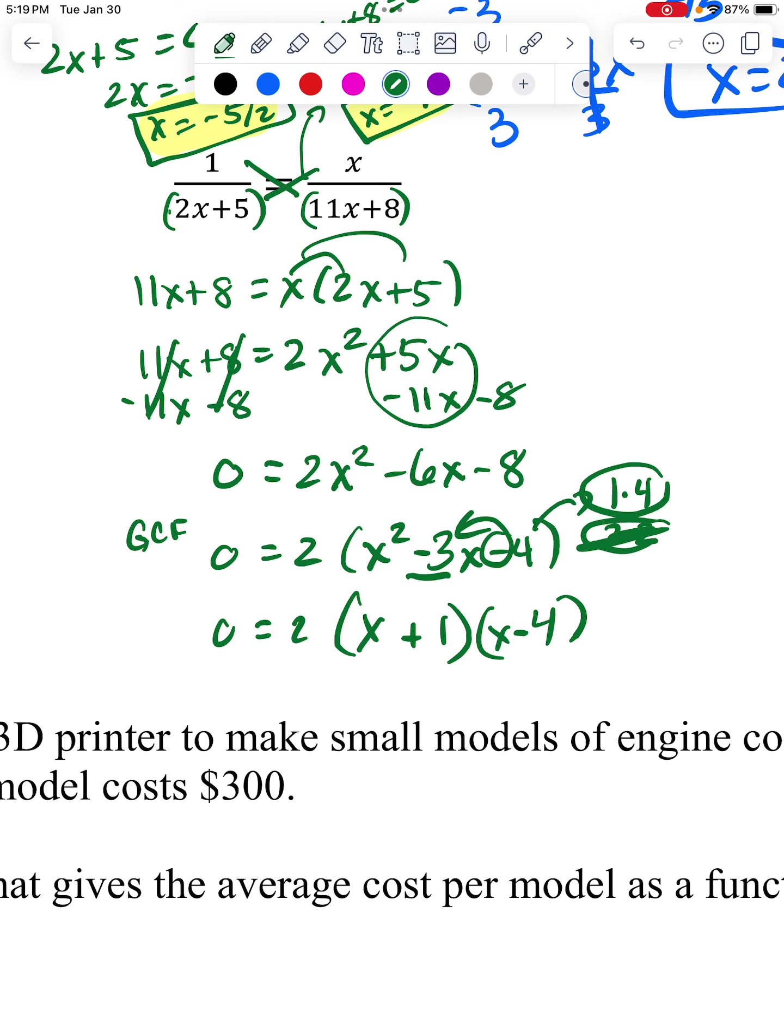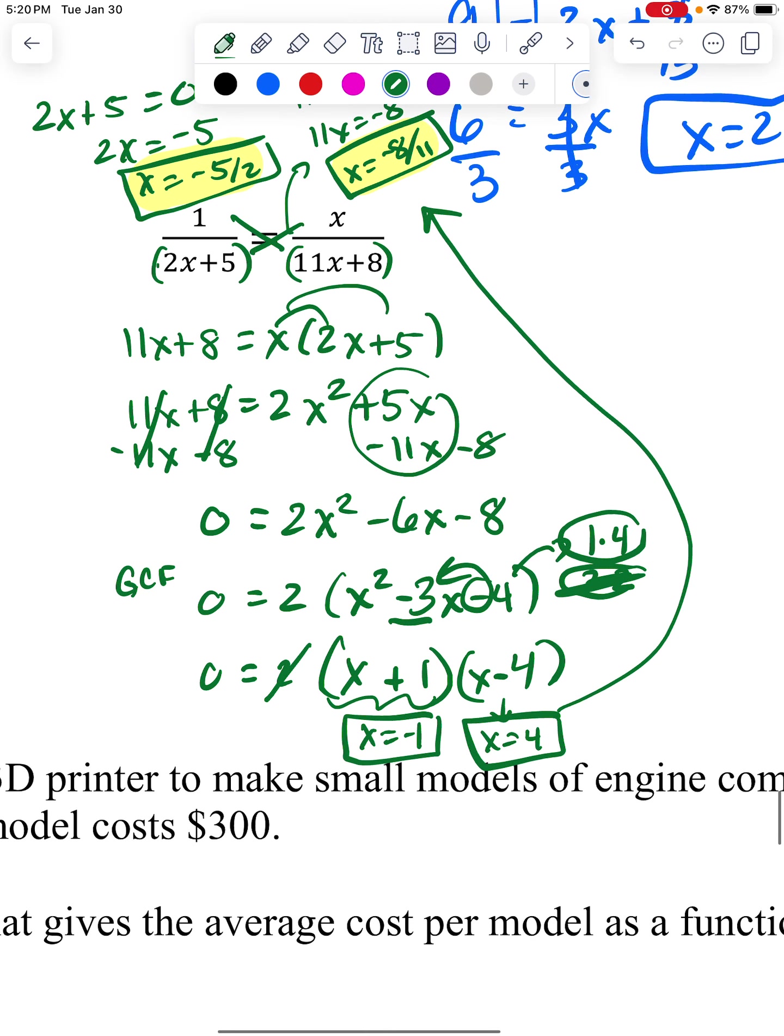When will that be zero? Well, 2 could never be zero. This will be zero if x equals negative 1. And this will be zero if x is positive 4. And then when I look back up here, neither one of those numbers is going to make the bottom zero. So both of them are legitimate keepers. And I'm good to go.